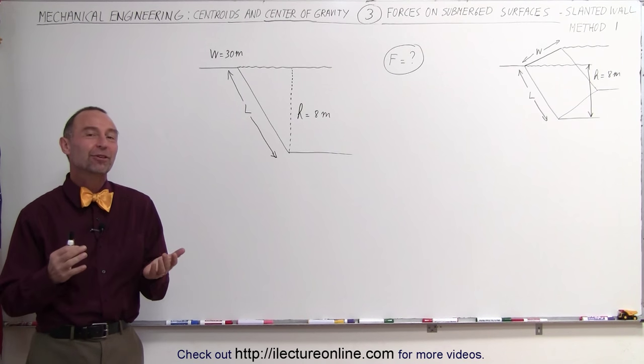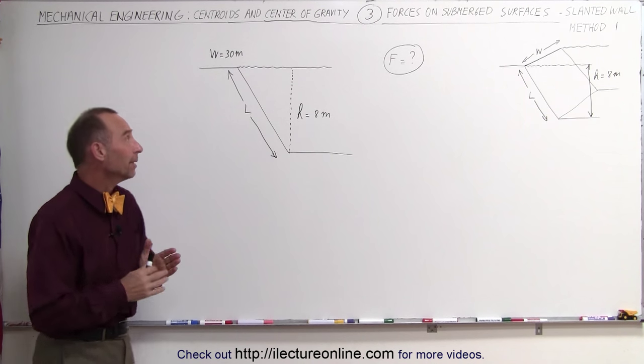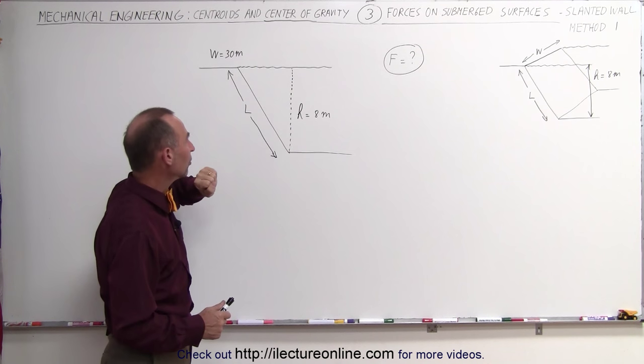Welcome to Electron Line. Here in this video we're going to try and figure out the total force on the dam. This is a slanted dam. The depth of the water is 8 meters. The width of the dam is 30 meters.